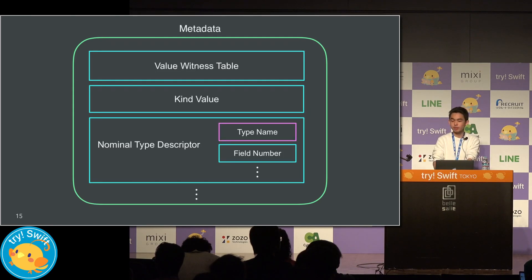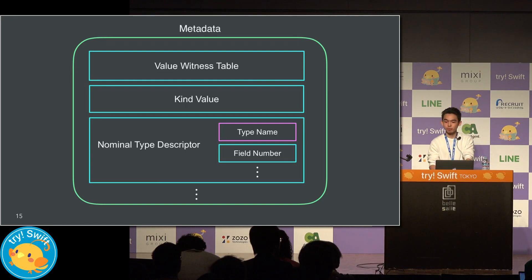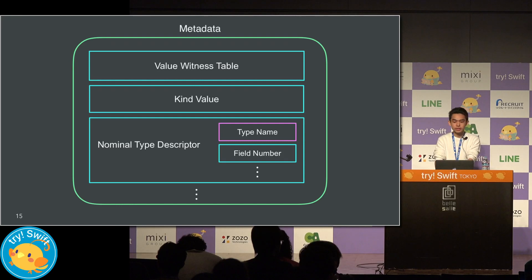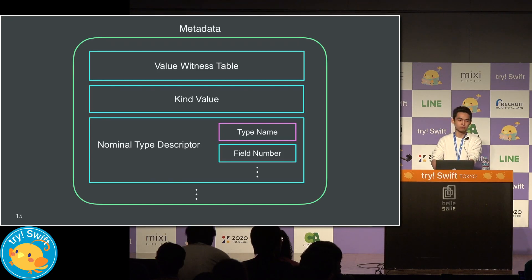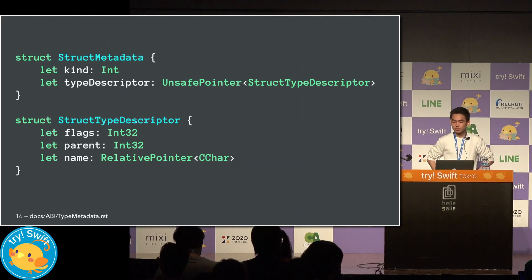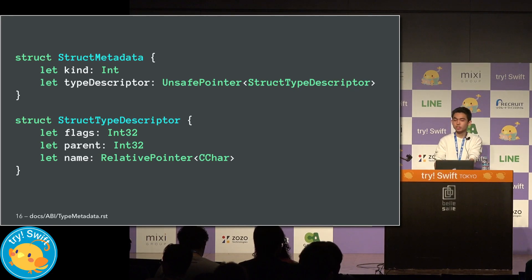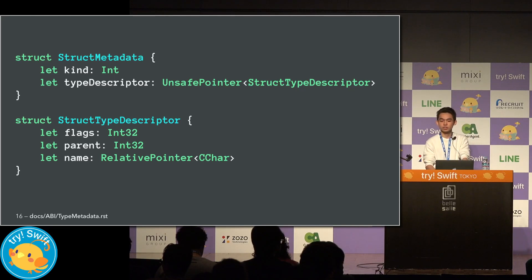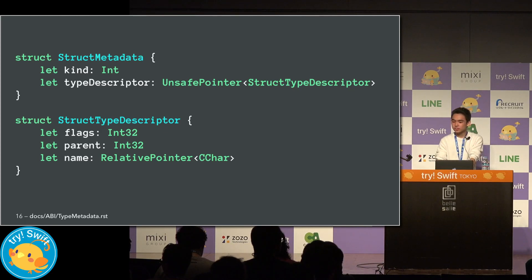In the nominal type descriptor, there is the typename we are looking for. We can get the type name from the nominal type descriptor by just advancing the metadata pointer. It seems not difficult to implement. So let's reproduce the string initializer in Swift runtime. In the first step, reproduce the memory layout as a struct. Most information about the memory layout is documented, but part of it is already outdated, so we need to read the source code of the Swift compiler directly. To simplify this example, I'll only implement for struct.